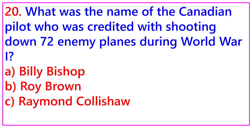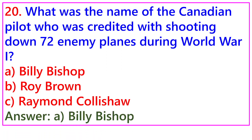Question 20: What was the name of the Canadian pilot who was credited with shooting down 72 enemy planes during World War I? A. Billy Bishop, B. Roy Brown, C. Raymond Collishaw. Answer: A. Billy Bishop.